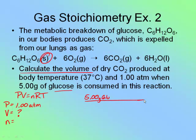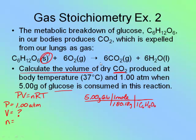The molar mass of glucose is 180.18 grams, so 5 grams ÷ 180.18 g/mol converts me to moles of glucose. Now I do my mole ratio. Between glucose (1 C₆H₁₂O₆) and CO₂, there are 6 CO₂ produced per 1 glucose in this reaction.